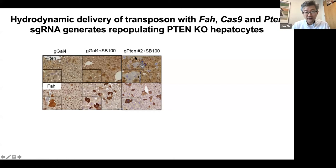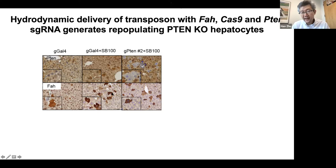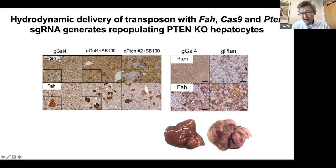These are transposons with FAH, a gene that rescues a mouse monogenic disease called hereditary tyrosinemia, essentially a rescue or selection marker. When co-injected into the tail vein, they integrate into the genome. The FAH rescues the FAH knockout mouse and clones grow out. You can measure regenerative capacity of the genetic perturbation using deep sequencing of the entire liver over three to four weeks. If clonal repopulation is advantageous, you see more sgRNA; if selected against, you see less.